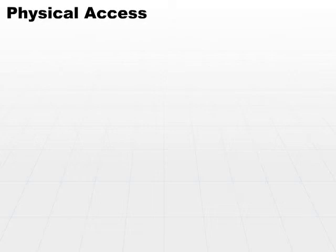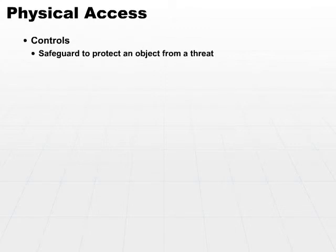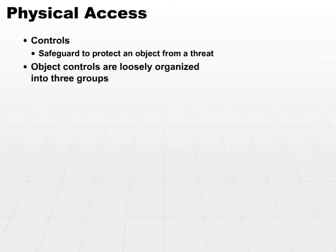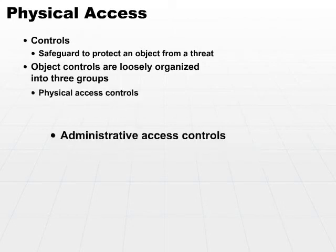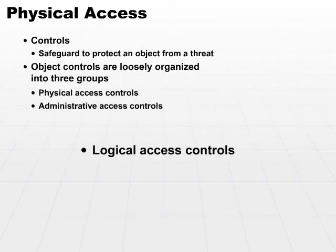In order to control access to objects, we need to implement what we call controls. A control is any safeguard that is used to protect an object from a threat — it's anything that stands in between the subject and the object. Typically, our object controls can be organized into three groups: physical access controls, administrative access controls, and logical access controls. These are loose groups, and there can be some overlap, with some types of controls fitting into multiple categories.